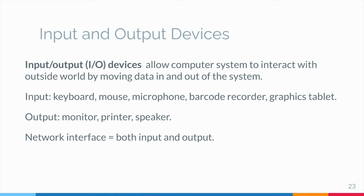An output device is used to send data out of the system. Some output devices are monitor, printer, and speaker. A network interface acts as both input and output — data flows from the network into the computer and out of the computer into the network. Input and output devices are usually called I/O devices.